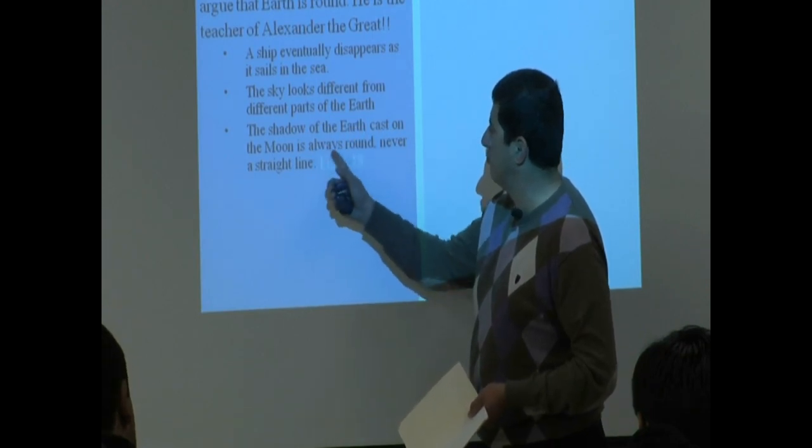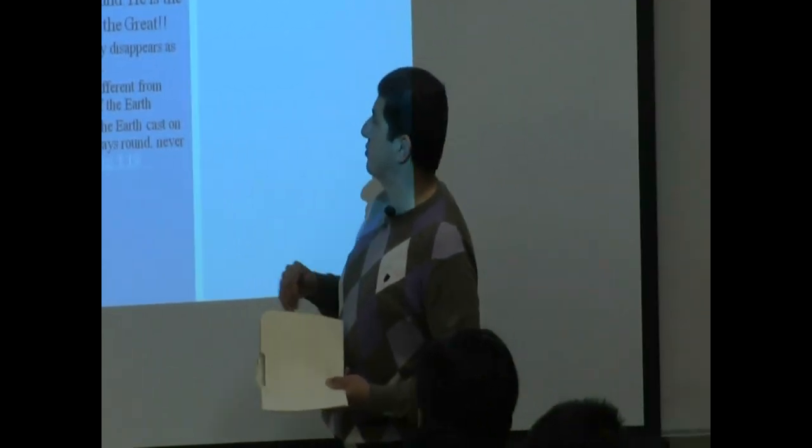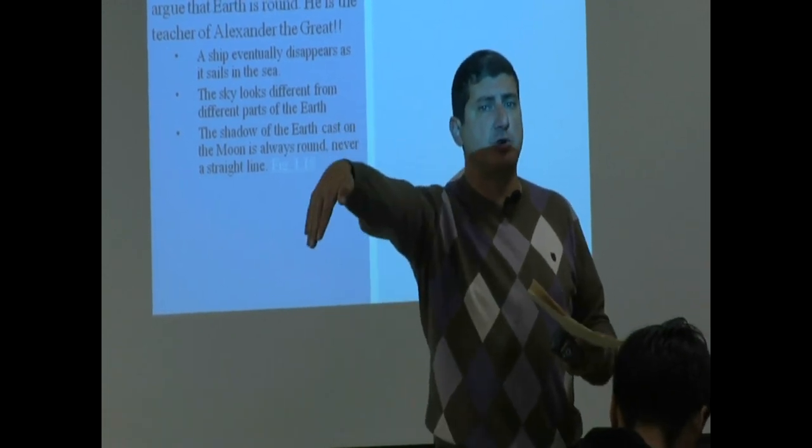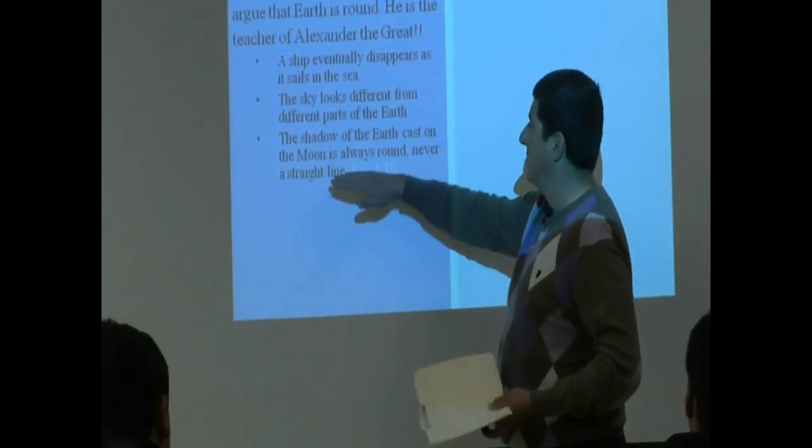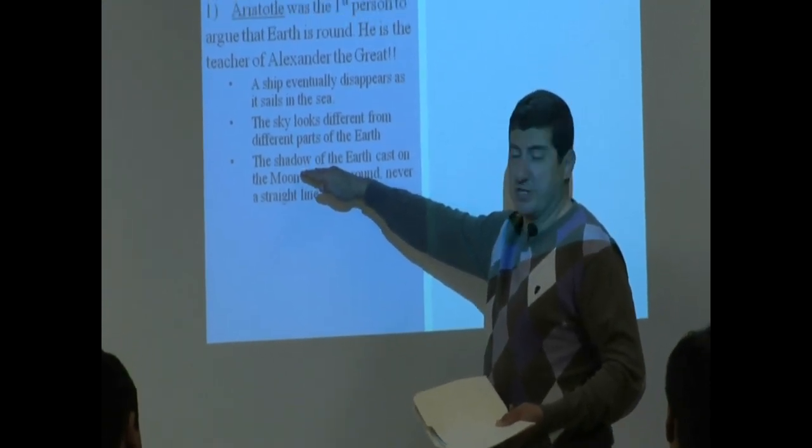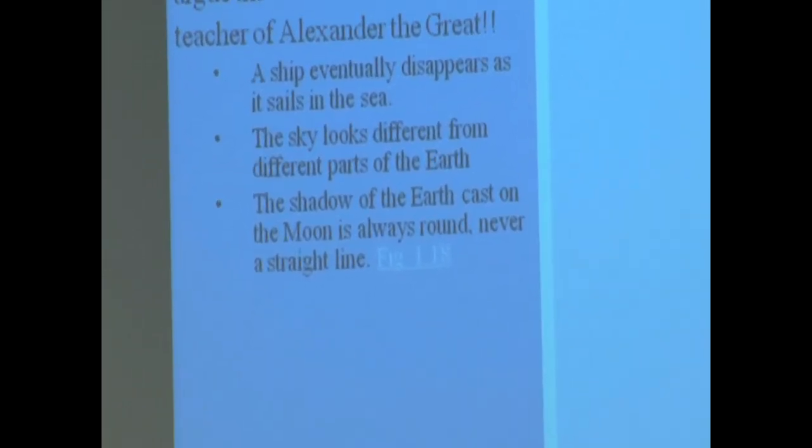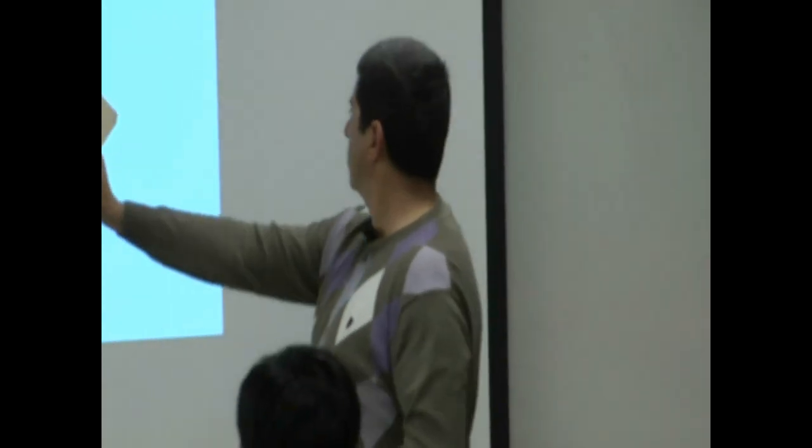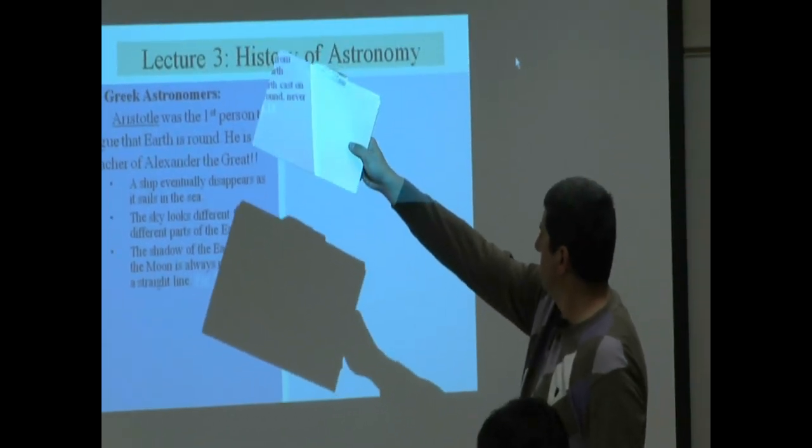The shadow of the earth cast on the moon is always round, never a straight line. So basically, one after another, they're pretty strong arguments. This one is saying if a ship sails, eventually they're going to fall below your horizon. So he notices that the earth is curved. The sky looks different. This is probably the strongest argument - the shadow of the earth cast on the moon.